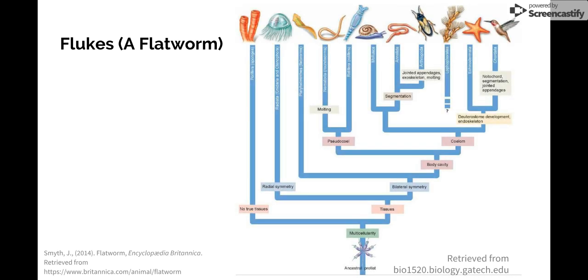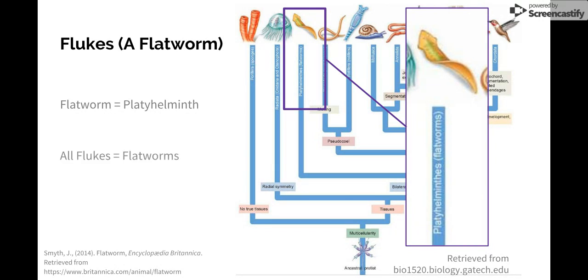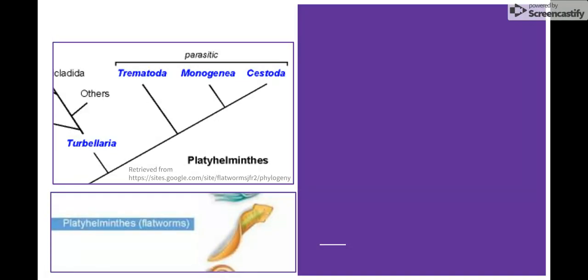Here is an ancestral tree that we have seen previously in the nematode units. Here is the nematode unit, chordates are over here, and flatworms are right here, which are scientifically called platyhelminthes. Flatworms is just the non-scientific word for platyhelminthes. All flukes are flatworms, but not all flatworms are flukes. Under the platyhelminthes there are four subcategories.